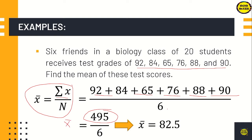Divided by 6 — why 6? Because we have 6 different grades, 6 friends. So the mean is approximately 82.5. The average grade of the 6 friends is 82.5. That is the final answer for finding the mean.